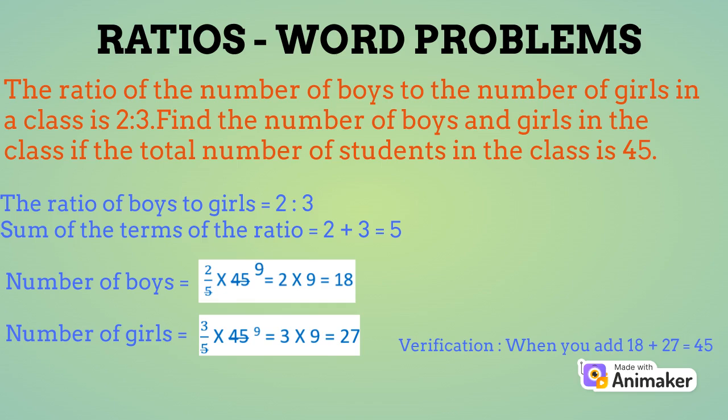Let's move on to the second question. In this question, the ratio of boys to girls in a class is 2 is to 3 and the total strength of the class is 45. You have to find out the actual number of girls and boys in the class.